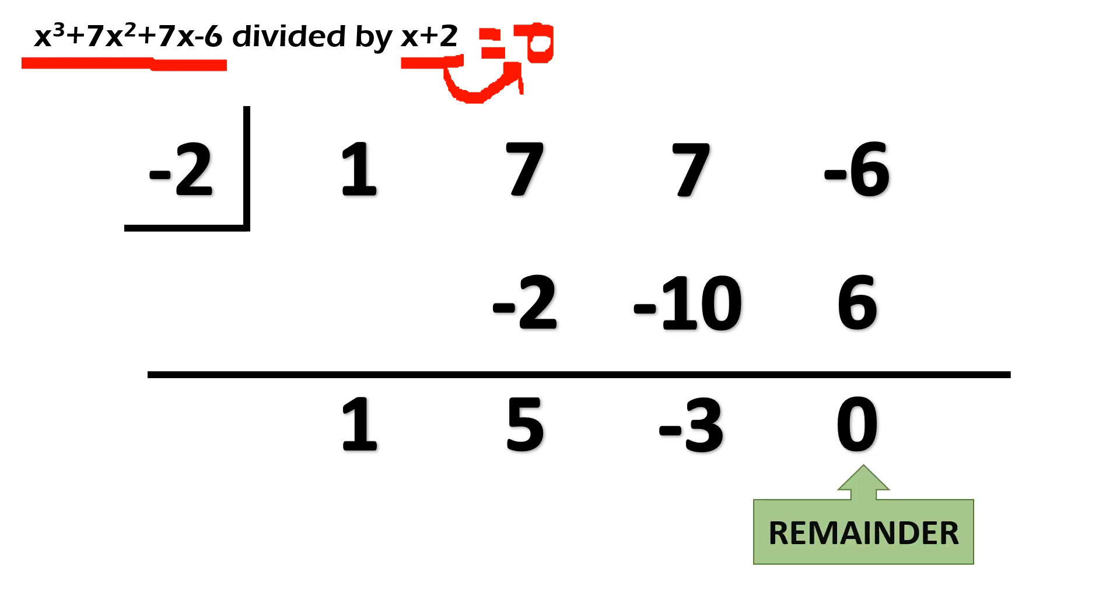Remember, yung 0, yung pinakadulo, that's your remainder. So, if it says 0, ibig sabihin, wala tayong remainder. Now, paano natin ilalagay yung quotient? Now, pakitingnan yung ating leading coefficient dito. Or, sorry, yung leading term na X cubed. Kung yan ay nagsisimula sa X cubed, yung inyong final answer ay magsisimula sa X squared. 1 degree less than your dividend. So, magiging 1 X squared na ito. Tapos, ito na lang ay X. And then, your constant. So, your final answer in our first example is X squared plus 5X minus 3.